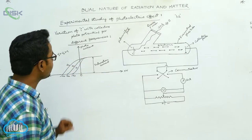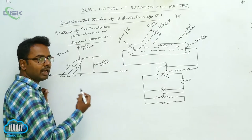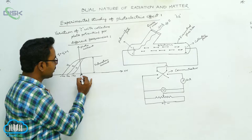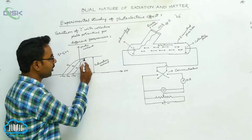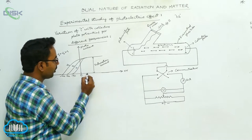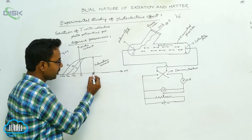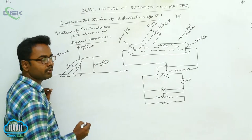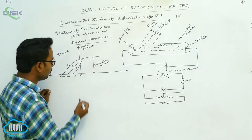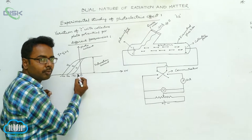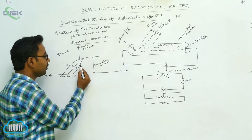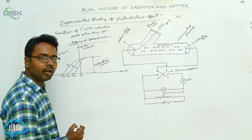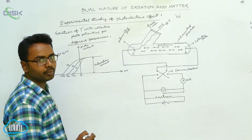From the graph it is clear that as we increase the positive potential of the collector plate, the photocurrent increases and becomes maximum at a particular positive potential. Beyond this, if you increase the positive potential further, there is no increase — this maximum photocurrent is called saturation current. As we increase the negative potential given to the collector plate, the photocurrent gradually decreases, and at a particular minimum negative voltage it becomes zero — that is called the stopping potential.